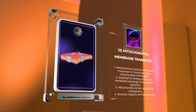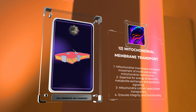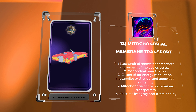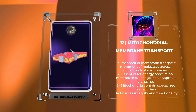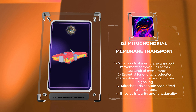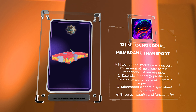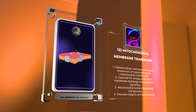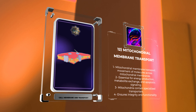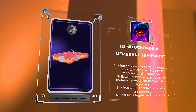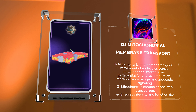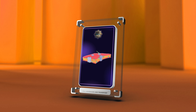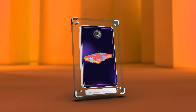Mitochondrial membrane transport refers to the movement of molecules across the mitochondrial membranes. This process is crucial for various cellular functions including energy production, metabolite exchange, and apoptotic signaling. Mitochondria contain specialized protein complexes and transporters that facilitate the import and export of molecules, ensuring the integrity and functionality of these organelles. Understanding mitochondrial membrane transport provides insights into mitochondrial dysfunction and associated diseases.